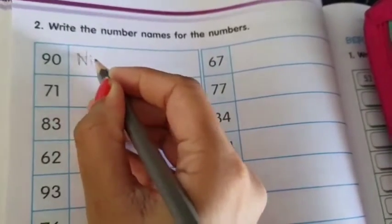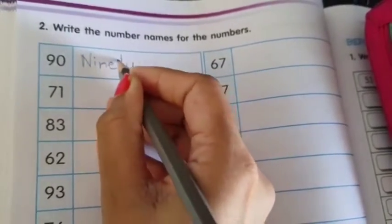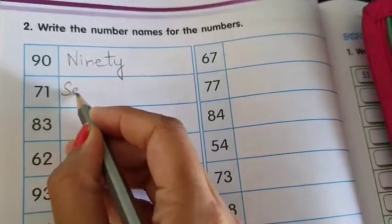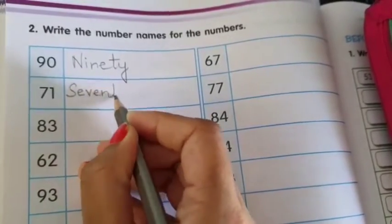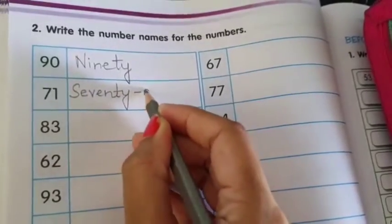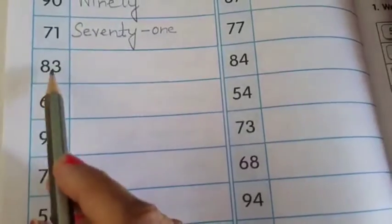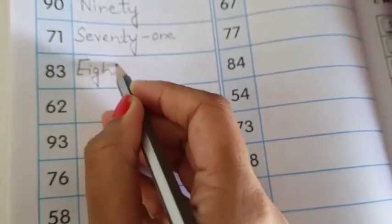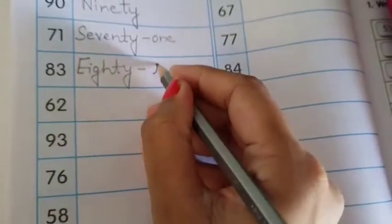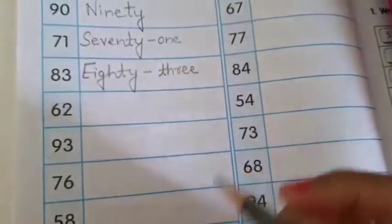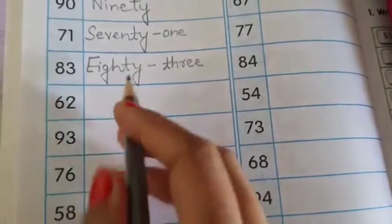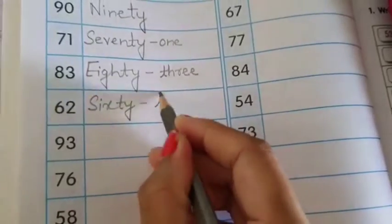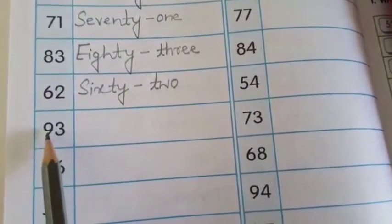NINETY 90. Next 71. So write down SEVENTY 70 ONE 1. Next 83. Write down EIGHTY 80 THREE 3. 62. SIXTY 60 TWO 2, 62.